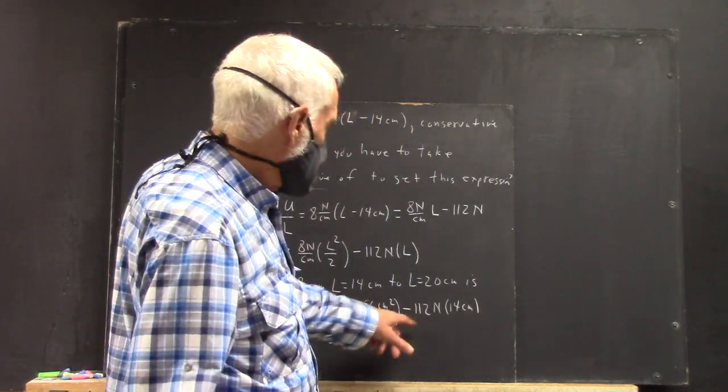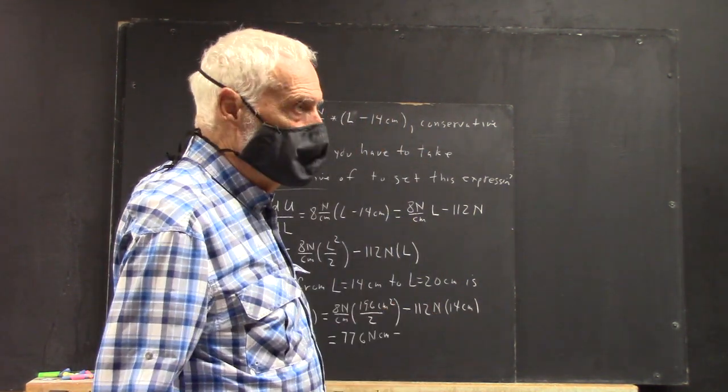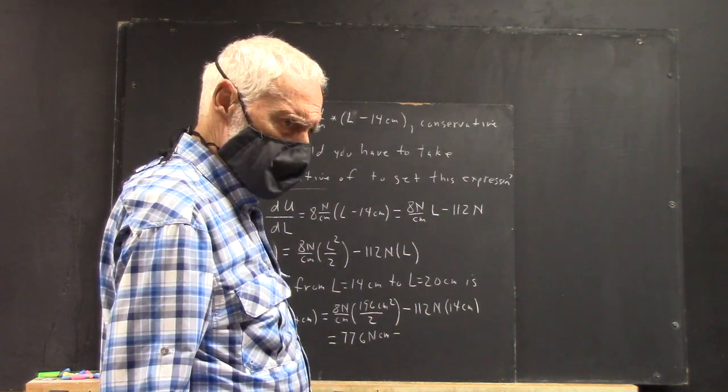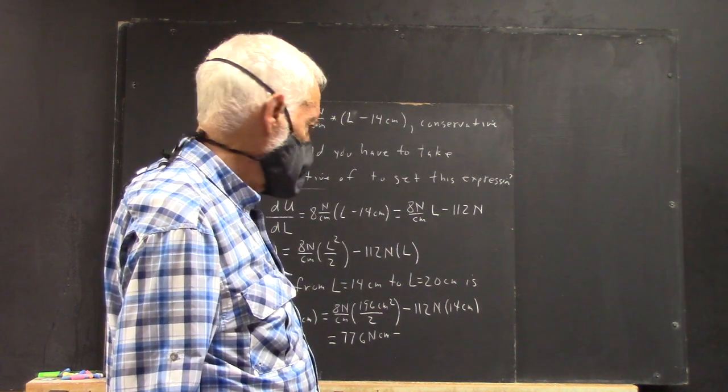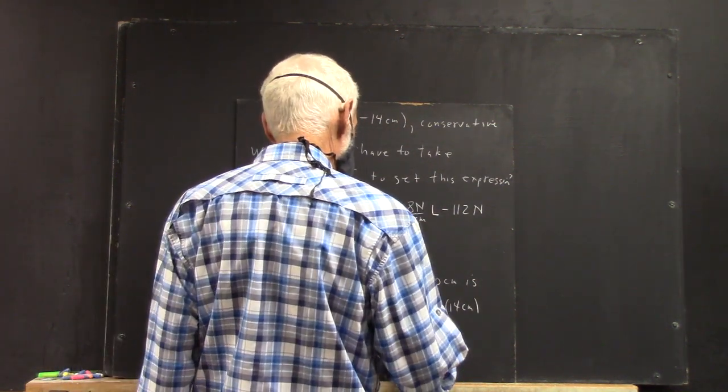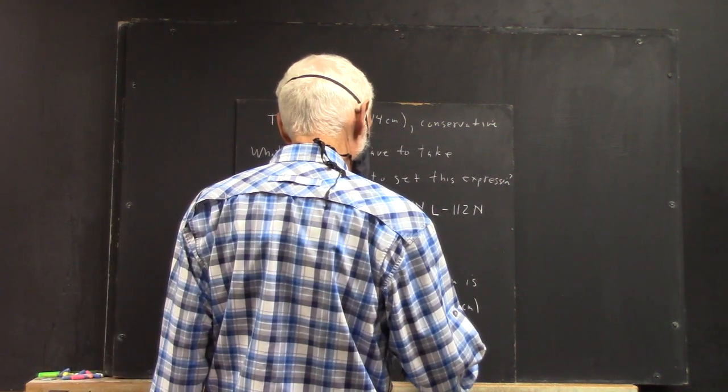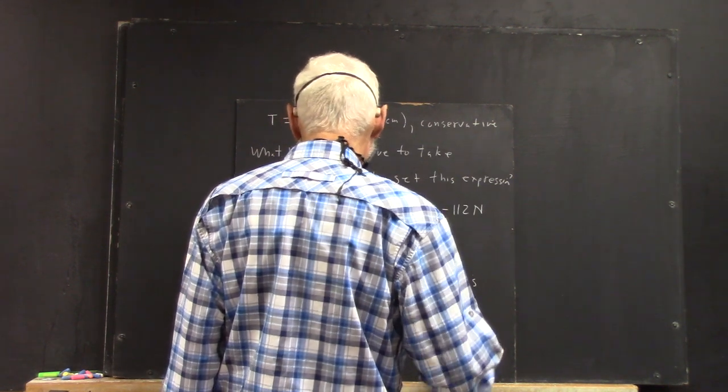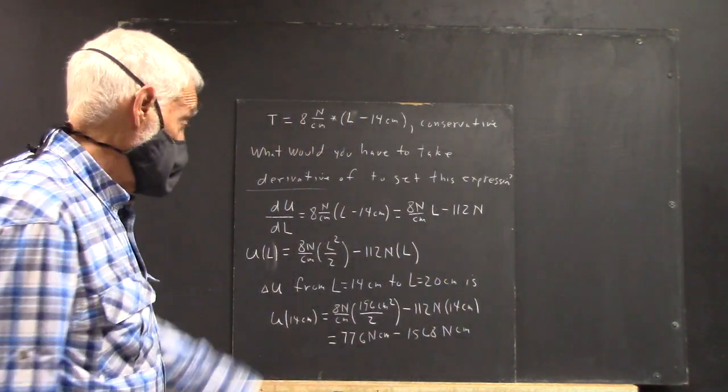Okay, well, it's easy enough. That's 1400, and 12 times 14 is 128. No, it's 168. So, what did I say? 1400, 1568 newton centimeters. It's negative.